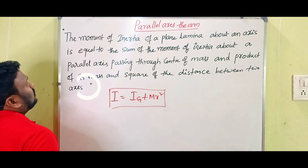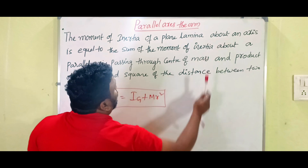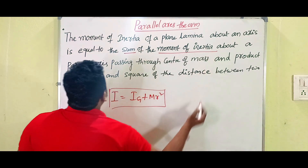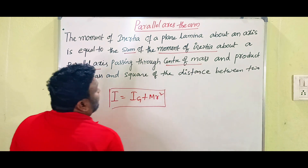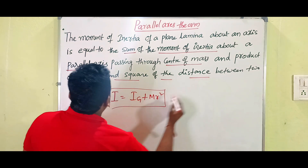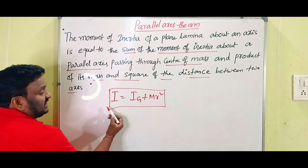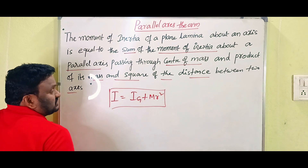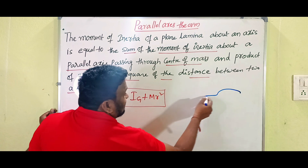The moment of inertia of a plane lamina about an axis equals the sum of the moment of inertia about a parallel axis passing through the center of mass and the product of its mass and square of the distance between the two axes. This is given by I = Ig + MR².